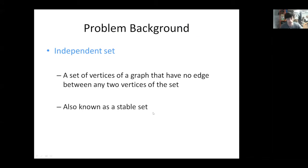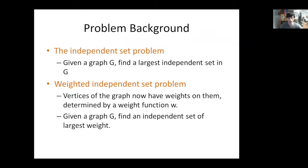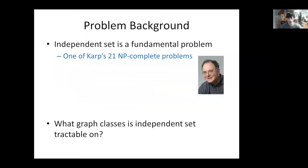For clarity, I'll give the polling definition. An independent set is a set of vertices of a graph that have no edges between any two vertices of the set; these are also known as stable sets. The independent set problem asks us to find the largest independent set in G. There is a generalization: the weighted independent set problem, where vertices have weights determined by some weight function W, and we want to find an independent set of largest weight.